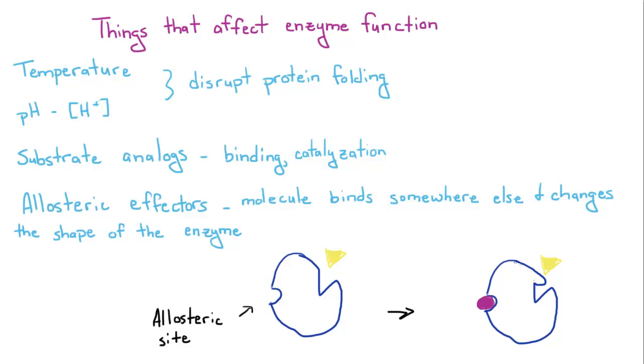You've got substrate analogs. These are molecules that look really, really similar to the actual substrate, but may have some different chemical properties. They might bind too tightly to the active site and will be unable, like the enzyme is actually unable to release this analog, so the enzyme is rendered useless.